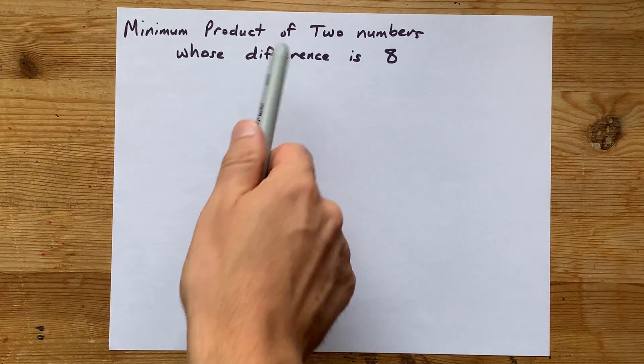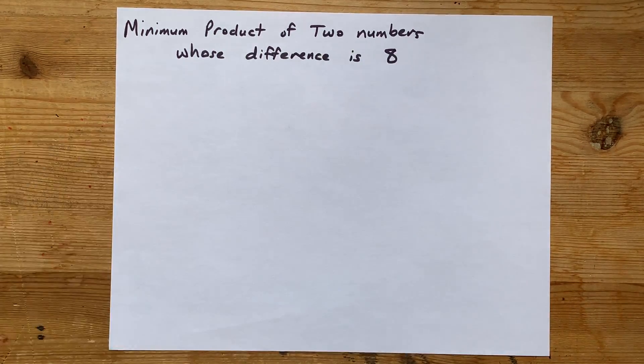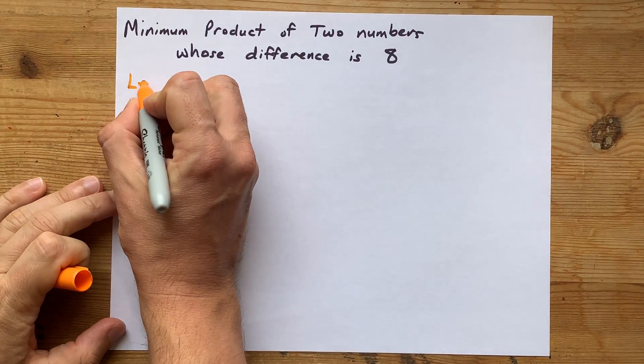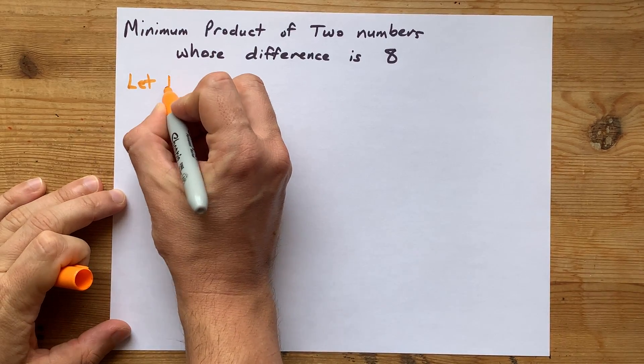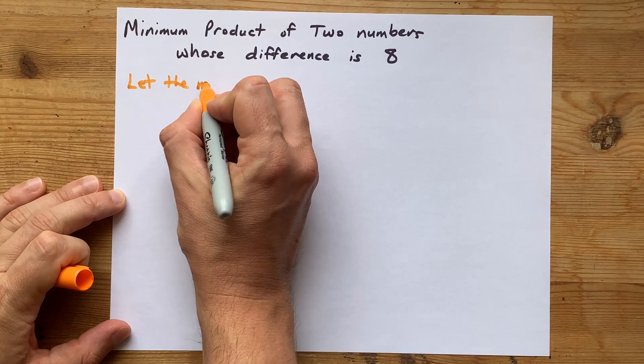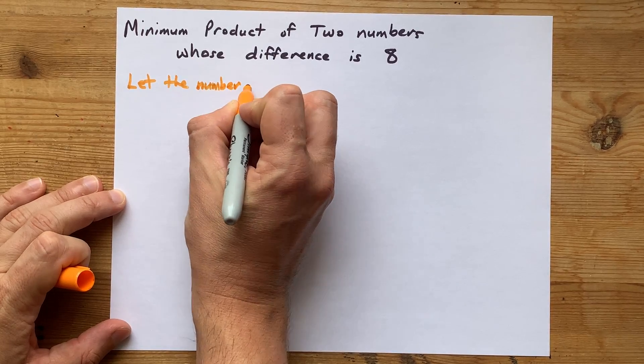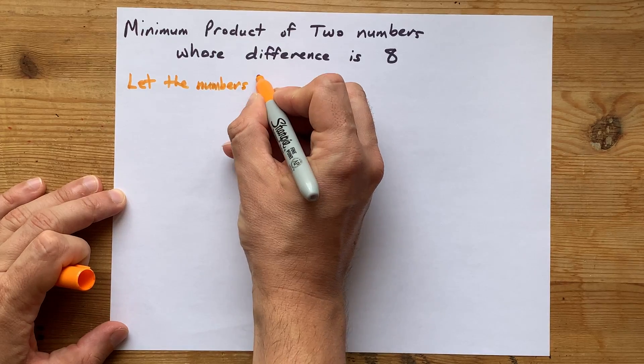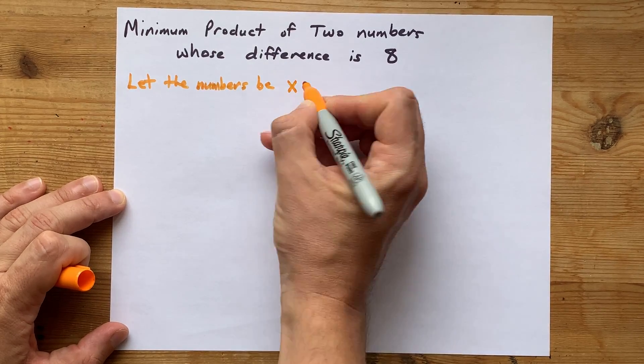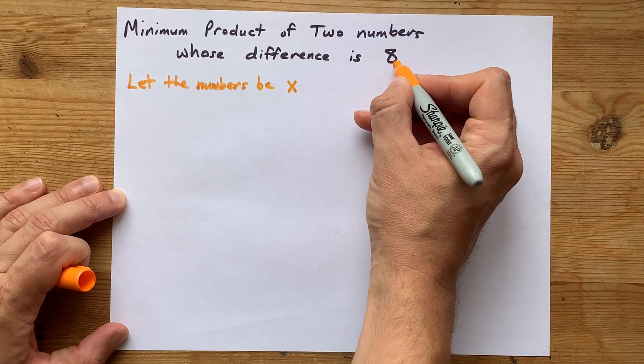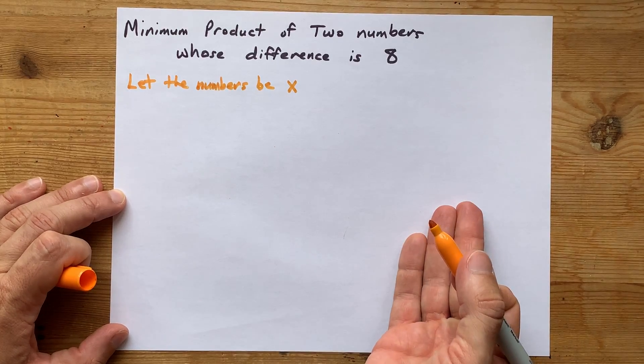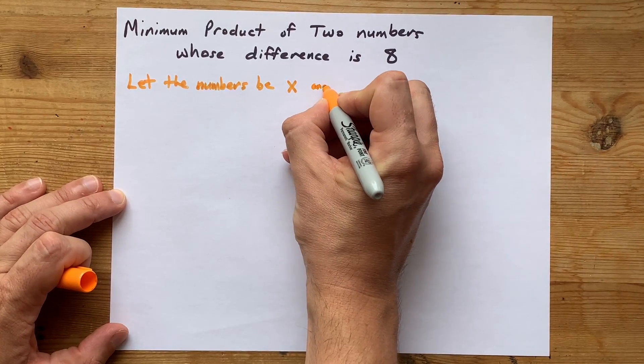How do you find the minimum product of two numbers whose difference is 8? Well, you can let one of the numbers be x, and then you just need another number that differs from x by 8. What number is bigger than x by 8? The answer is x plus 8.